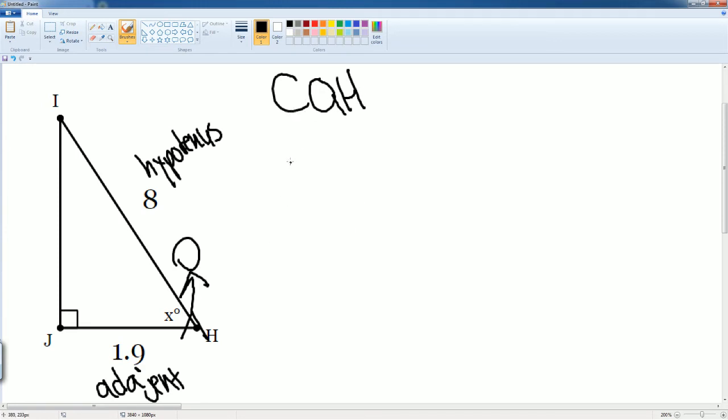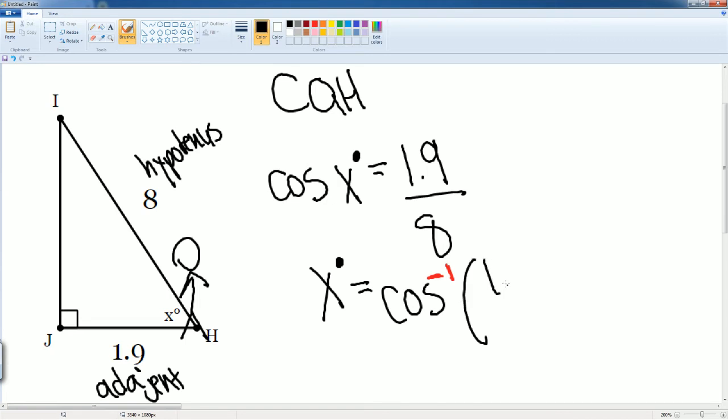So it should be CAH cosine adjacent and hypotenuse. So let's set that up. We write cosine. We don't know the angle, so we can just write X degrees is going to be equal to your adjacent, which is 1.9 divided by your hypotenuse, which is just 8. Now to get the angle, you just do the inverse. So X degrees is equal to your cosine. Same thing, but now it's to the negative 1 power. That's your inverse. Parentheses 1.9 divided by 8.